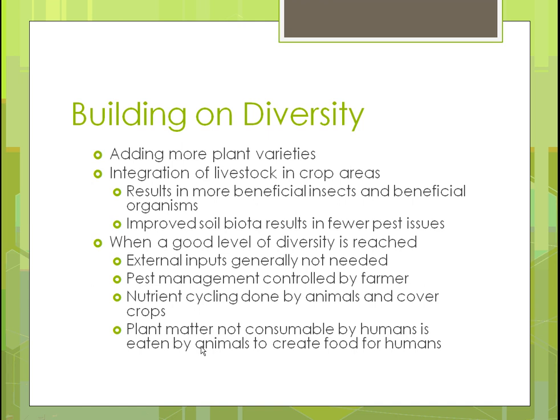Plant matter not consumable by humans is eaten by animals. In a cornfield, cows will go in and eat the remaining stalks, cleaning the field while getting nutrition to grow. They create meat, we eat the meat — plant matter we couldn't use is converted through animals into food for us. Farmers are also baling corn stalks like hay and using corn stover for feed.